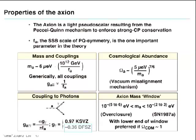Here are the properties of the axion: its mass is inversely proportional to the symmetry breaking scale, the decay constant. All couplings are inversely proportional to the decay constant. There's a key coupling of axion into two photons. If the axion were too light, there'd be way too much dark matter in the universe. If it's too heavy, you'd have a new pion — that wasn't seen. So you get a window of something like a micro-eV to a milli-eV — the range where you want to look for dark matter axions.